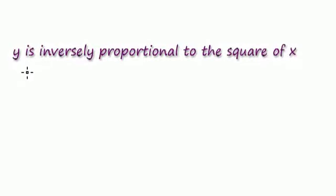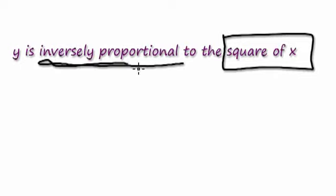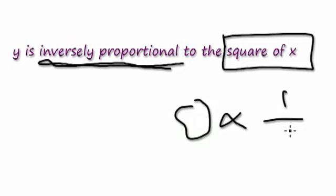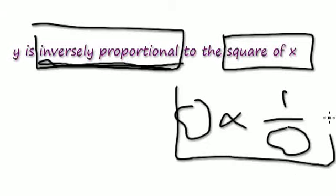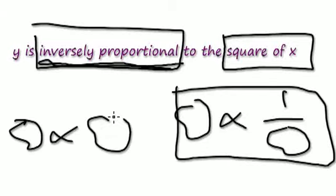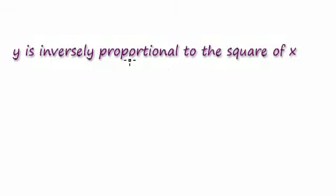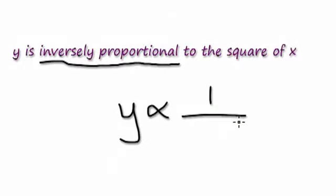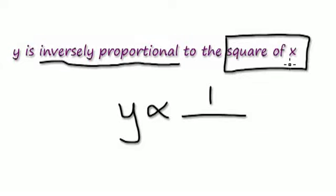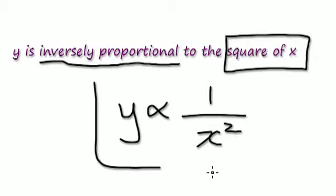Next one here. Y is inversely proportional to the square of X. The word inversely proportional tells me it is of the one-over-something type, as opposed to the direct type. So Y is inversely proportional — and then the square of X, which is the same as X squared. So this here would be your answer.